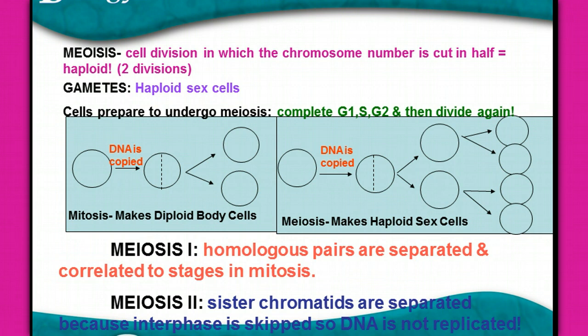The cells are going to prepare to undergo meiosis at the end of interphase. They go through G1 growth, S (synthesis) replicating the DNA, and then G2 preparing to divide. They divide, but then they divide again without going through interphase.